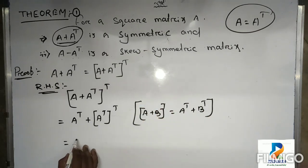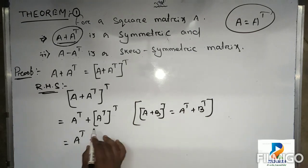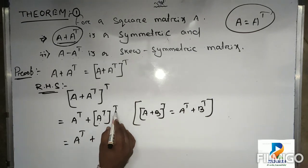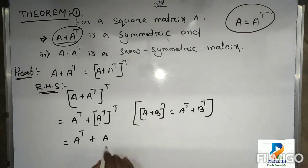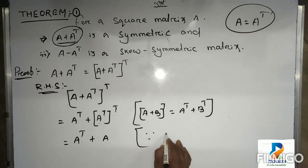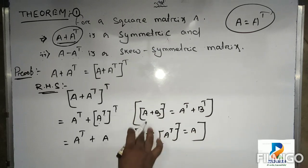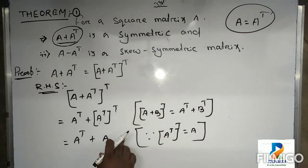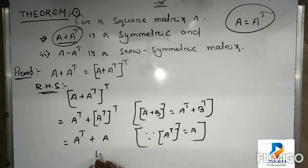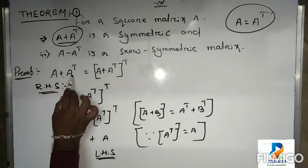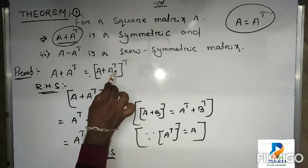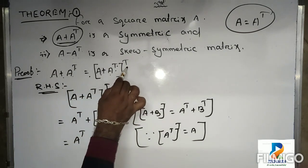Now, A transpose plus A transpose whole transpose equals A transpose plus A, because A transpose whole transpose equals A — that's a property of transpose. So this equals A plus A transpose, which is our LHS. Therefore A plus A transpose equals A plus A transpose whole transpose, completing the first proof.